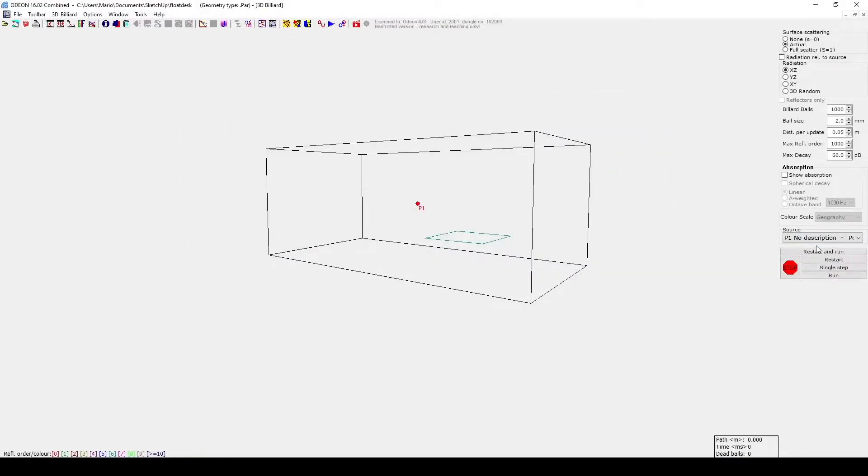These visualizations can be accessed by clicking on the 3D billiards icon, in addition to industrial, auditorium, and combined.